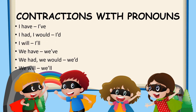I have — I apostrophe VE. I had or I would — I apostrophe D. I will — I apostrophe LL. We have — We apostrophe VE. We had or We would — We apostrophe D. We will — We apostrophe LL.